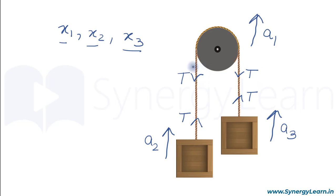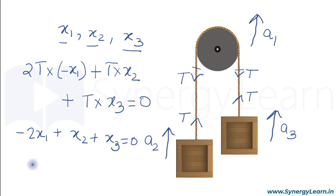So the work done by the tension on the pulley will be 2T from the tension on the two sides into minus x1 because the pulley is moving in opposite direction, plus work done by tension on one of the blocks will be T into x2, and on the second block will be T into x3, and total work will be equal to 0. So this results minus 2x1 plus x2 plus x3 equals to 0. But the accelerations were proportionate to displacements. Therefore, minus 2a1 plus a2 plus a3 will also be 0, and this is the required constraint relation between the respective accelerations.